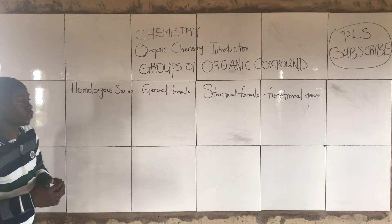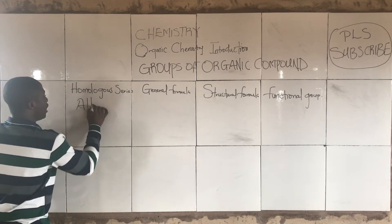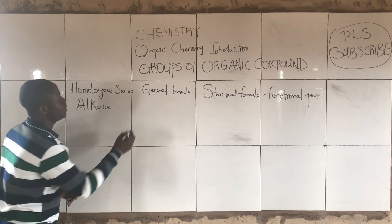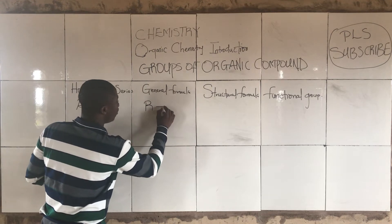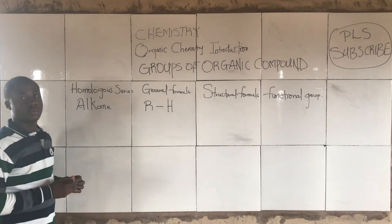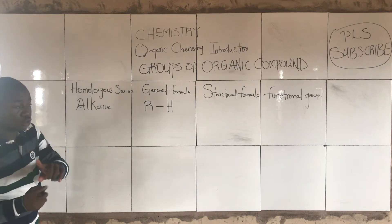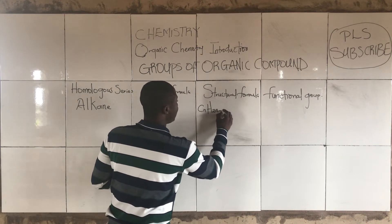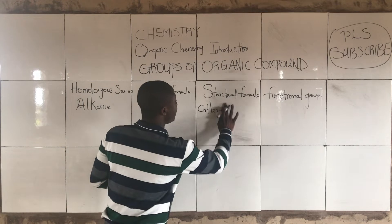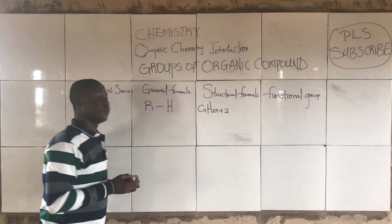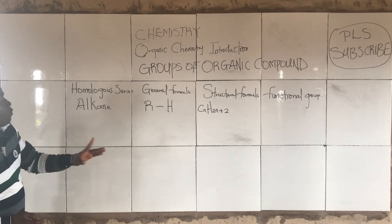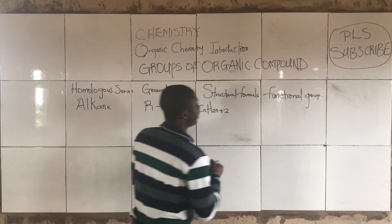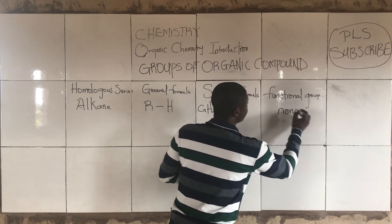The first homologous series is alkanes. The general formula for alkanes is CₙH₂ₙ₊₂. Their structural formula is CₙH₂ₙ₊₂. Now, their functional group — take note, alkanes have no functional group, so it is null.